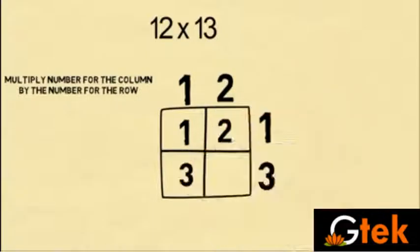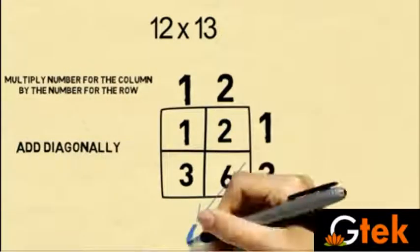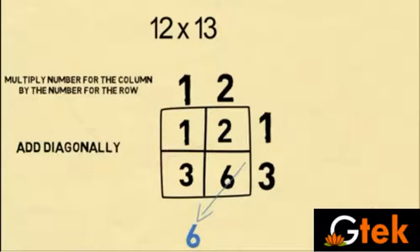So multiply number for the column by the number for the row. So 1 is 1, 2 is 2. And so the idea is that multiply number for the column by the number for the row.